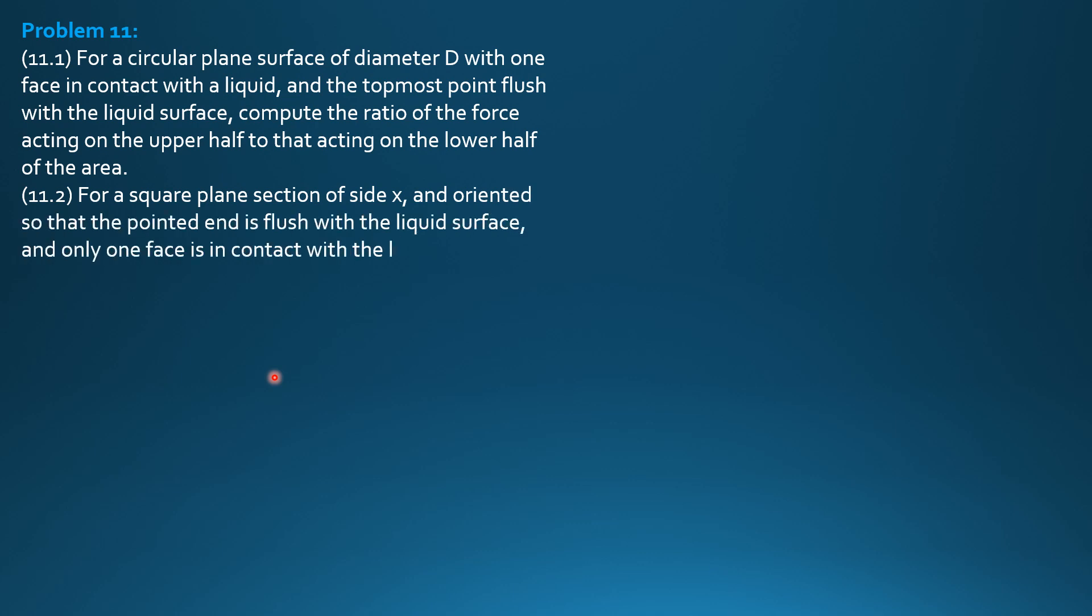Then, second situation. For a square plane section of side x oriented so that the pointed end is flush with the liquid surface and only one face is in contact with the liquid surface, compute the ratio of the force acting on the upper half to that acting on the lower half of area.